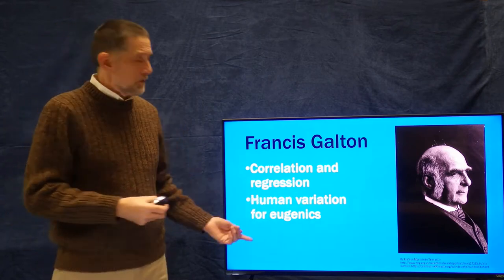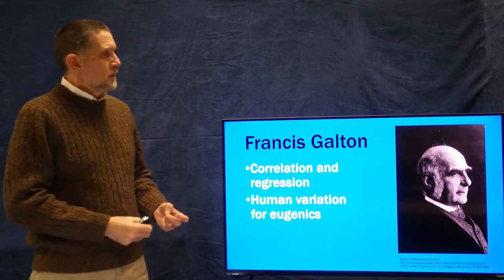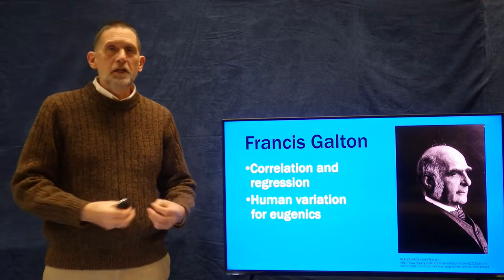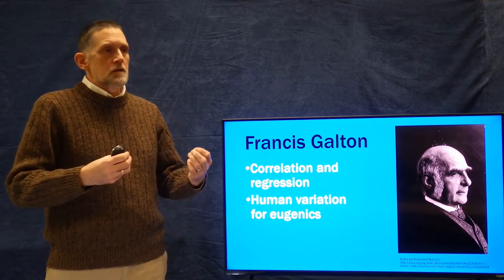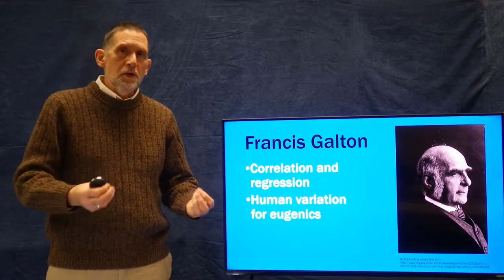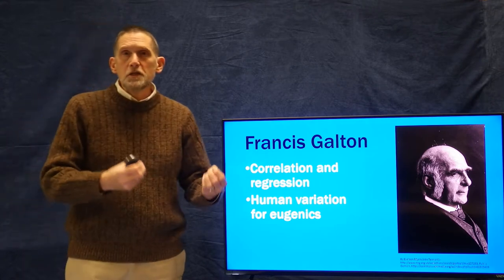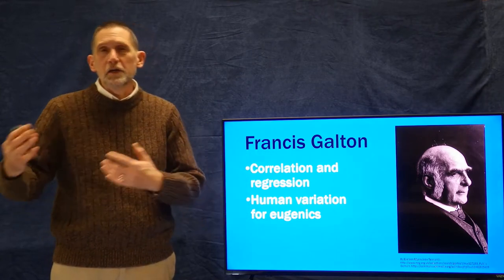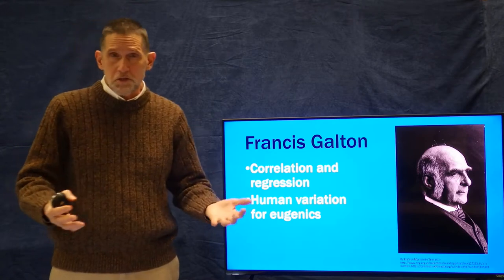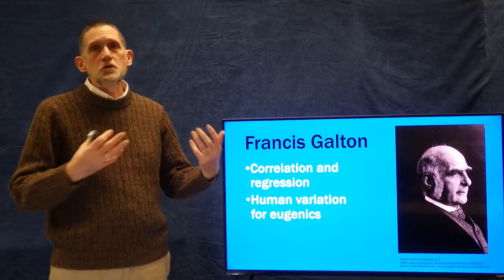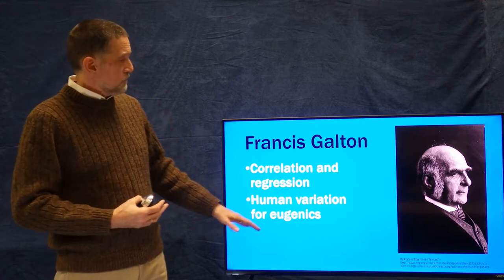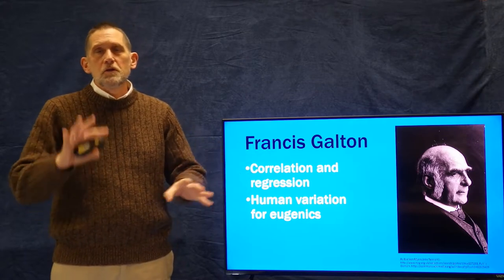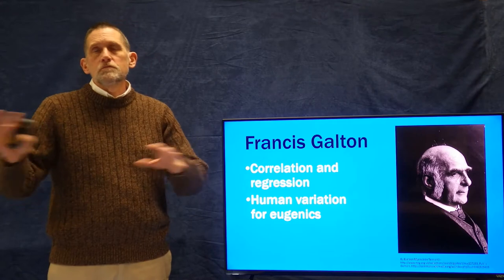What Galton was interested in was human variation, ultimately for eugenics. He was a relative of Charles Darwin and was interested in evolutionary theory. He thought it was proper to bring those ideas to understanding humans and human development — the development of the races, or what were then called lesser and higher races — and how those evolve and change.